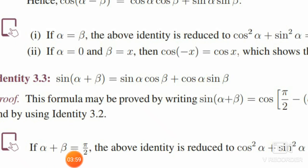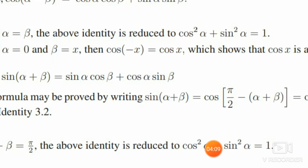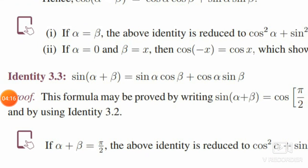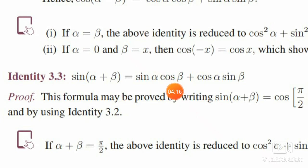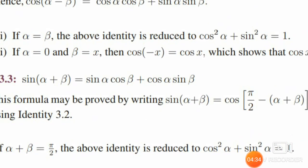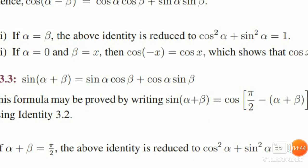In the same identity, substitute alpha plus beta equal to pi by 2. Then sin of pi by 2 is 1 on the left hand side. On the right hand side, substitute beta equal to pi by 2 minus alpha. Then sin alpha into sin(pi by 2 minus alpha) becomes sin alpha into cos alpha, and that gives sin squared alpha plus cos squared alpha, which equals 1. We already know cos squared theta plus sin squared theta is equal to 1, so the right hand side also gives 1. This confirms the identity is true.